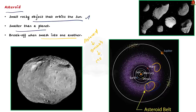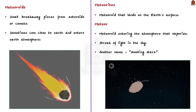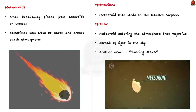Meteoroids are small breakaway pieces from asteroids, and they can also come from comets. A comet is something different from an asteroid, even though it also orbits the sun. Comets are made up of ice and dust. There are many situations where a meteoroid can break away and get close to the earth, and in some cases it can also enter earth's atmosphere.